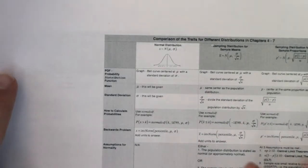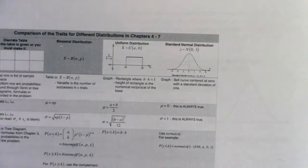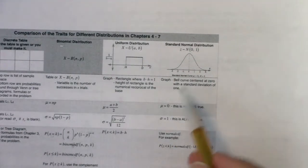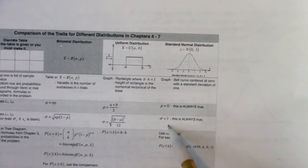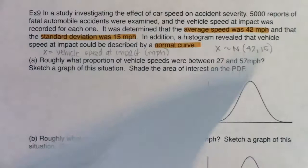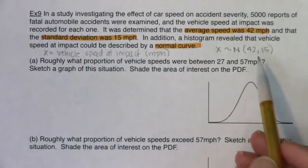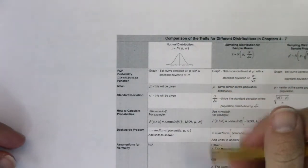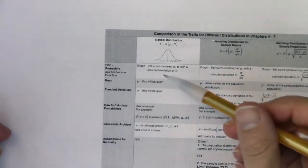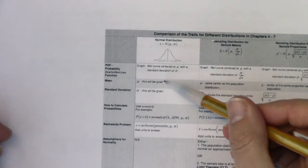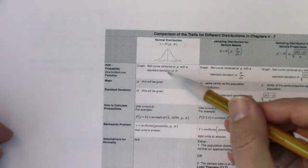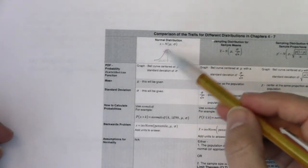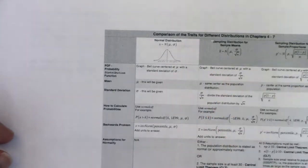Let's talk about how you could distinguish: am I on the standard normal or the regular normal? Well, let's look at what was given for the mean. In the standard normal distribution, you're always dealing with z-scores — the mean is always zero and the standard deviation is always one. We were on the normal curve, but our mean was not zero, so we can immediately rule out being on the standard normal distribution. For this problem, we're on any regular old normal distribution. For any normal distribution, the mean and standard deviation will always be given — we were given 42 miles an hour and 15 miles an hour — and the shape has that bell curve.